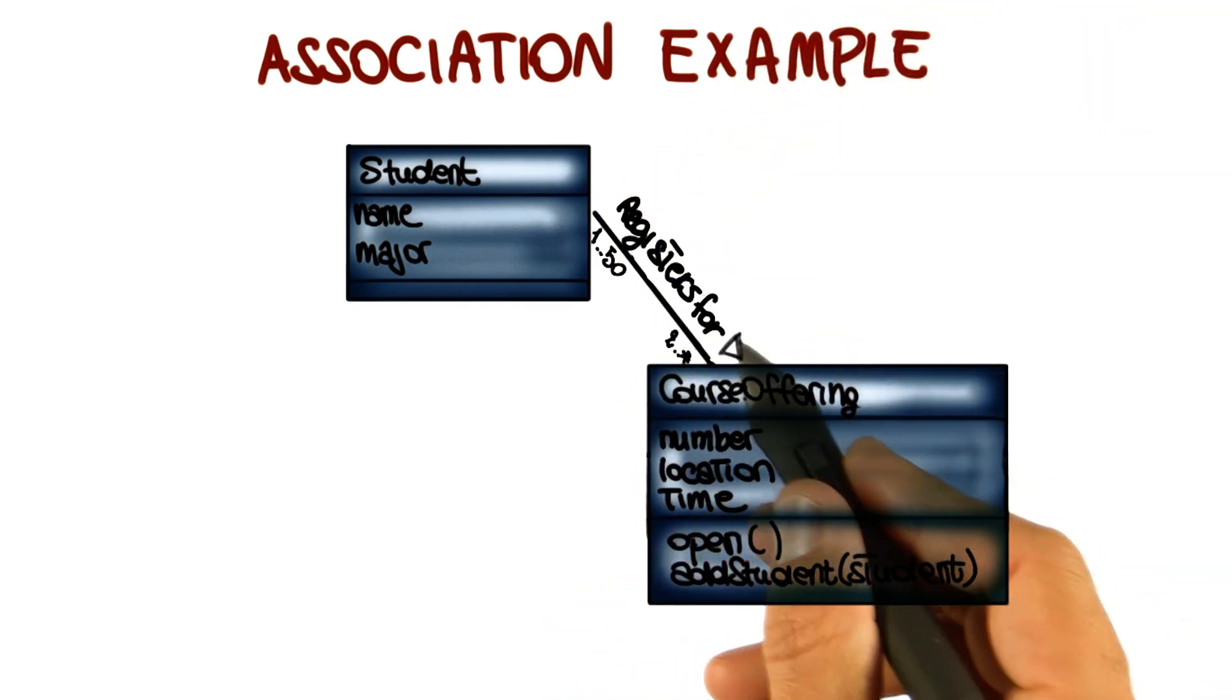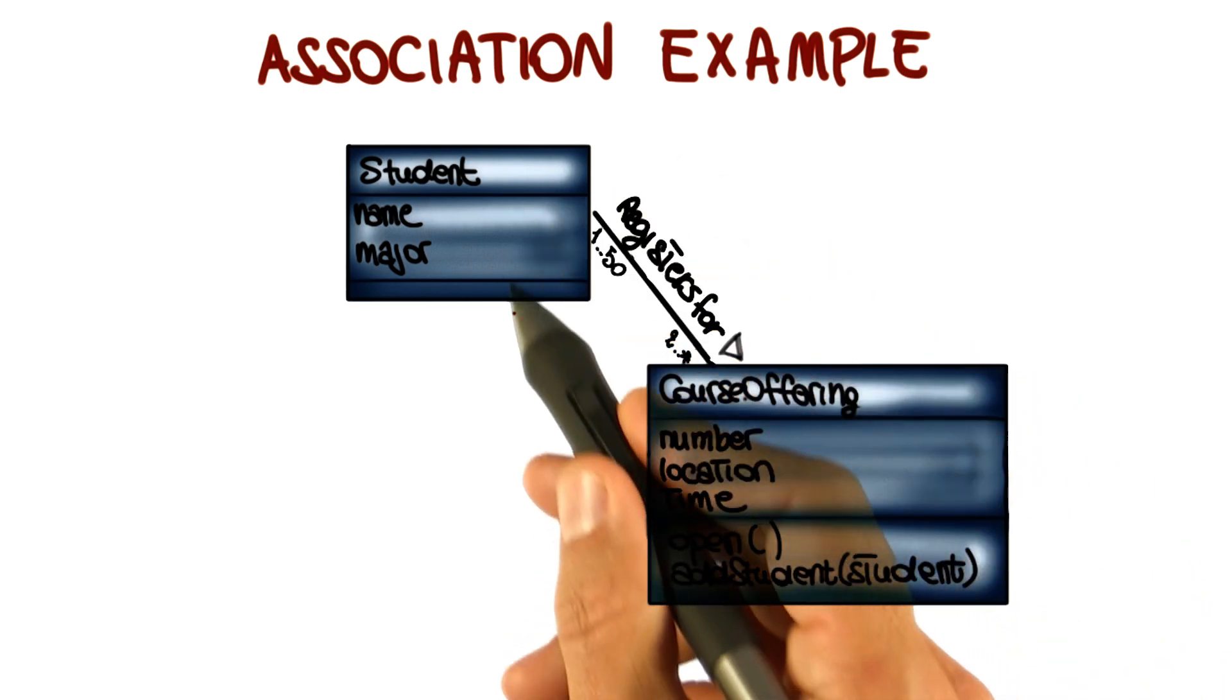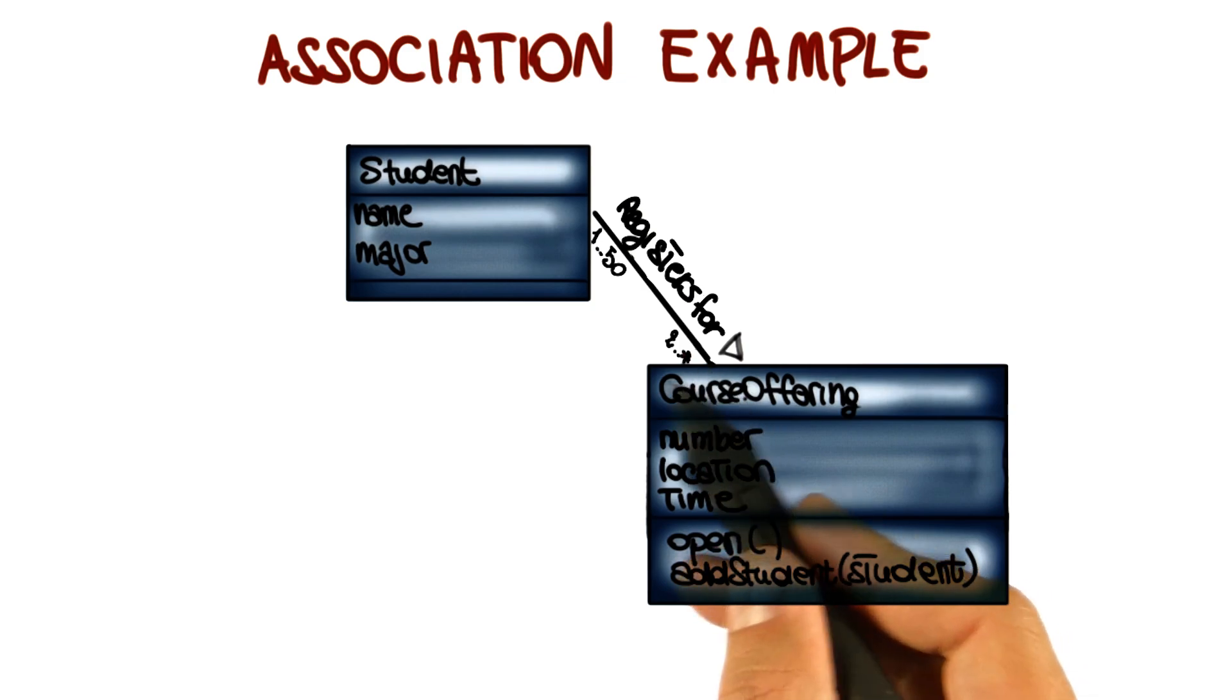So as you can see, by adding a label, a direction, and multiplicity, we make it much clearer what the relationship is, what it means, and what are its characteristics.